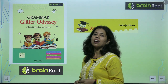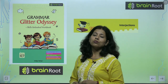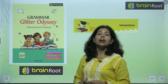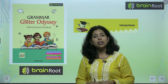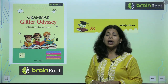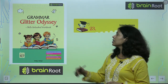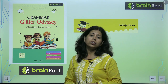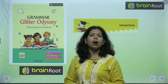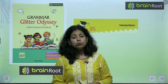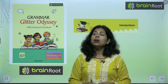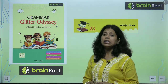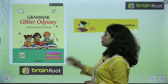Hello friends, I am your trainer Pooja. Welcome to my class of English Grammar. The name of the book is Grammar Glitter Odyssey of grade 5 by Brainwrote, a product of Amit Publishing House. Today we will start chapter number 23 of our book, that is Interjections.